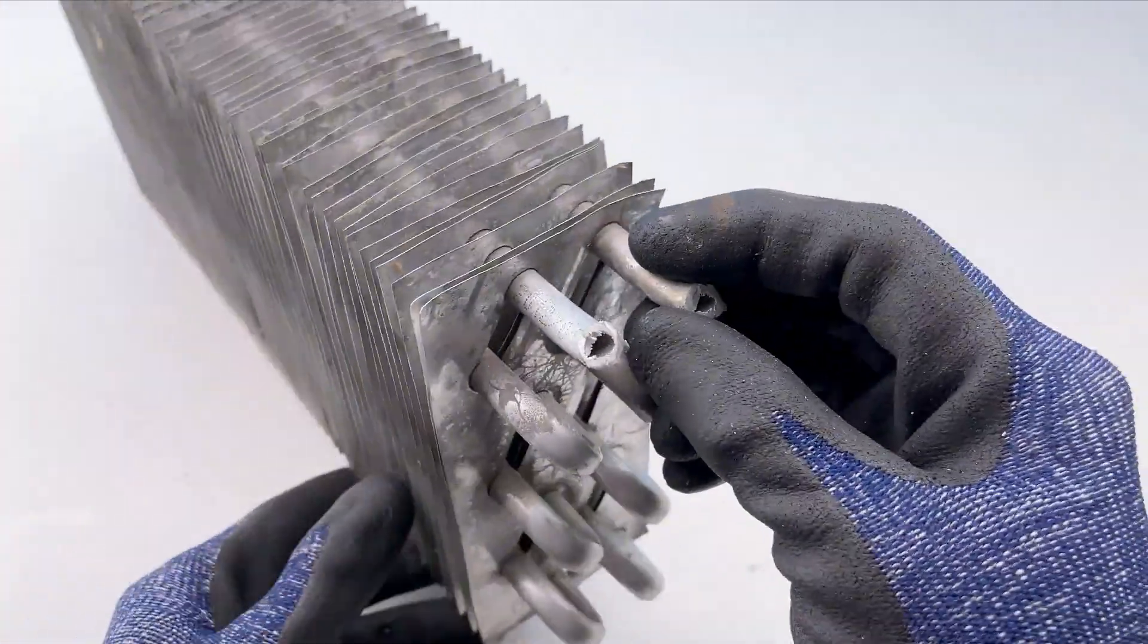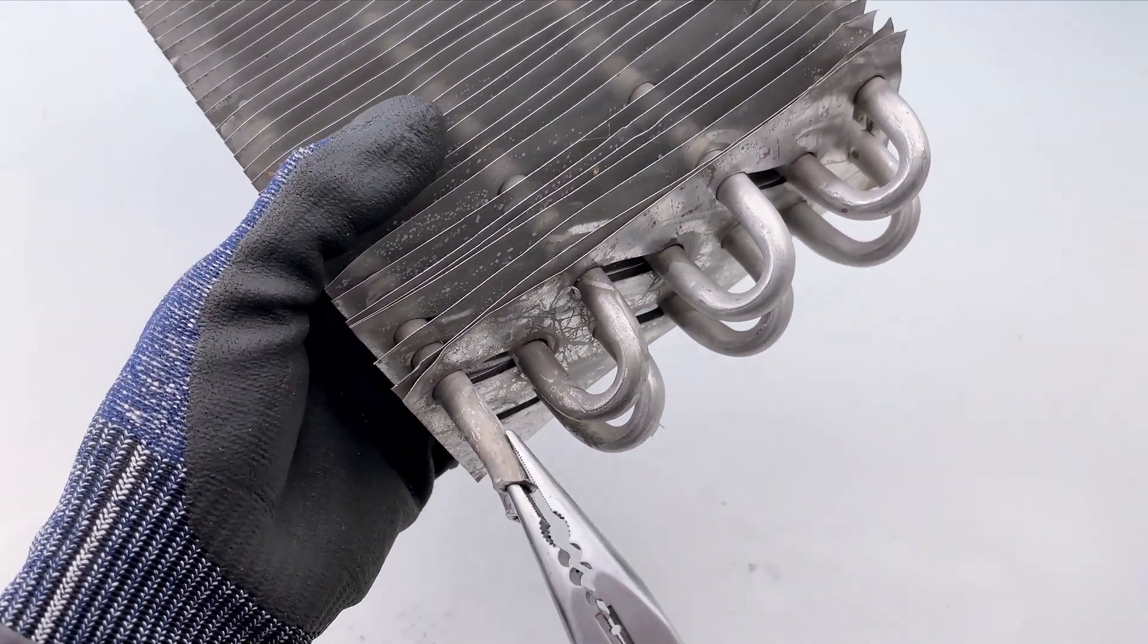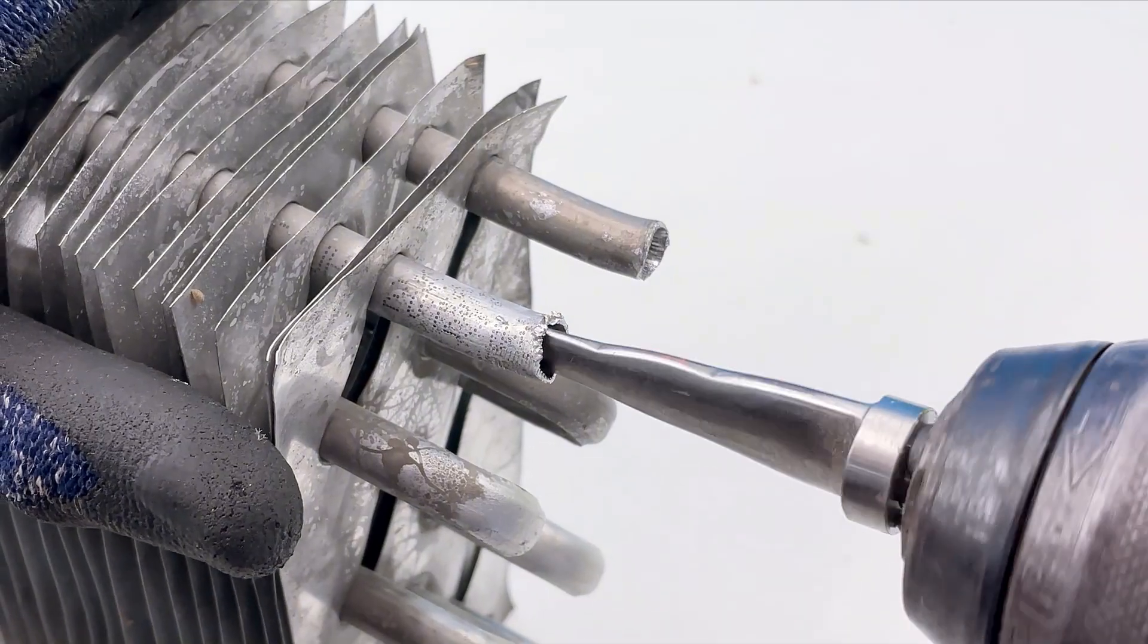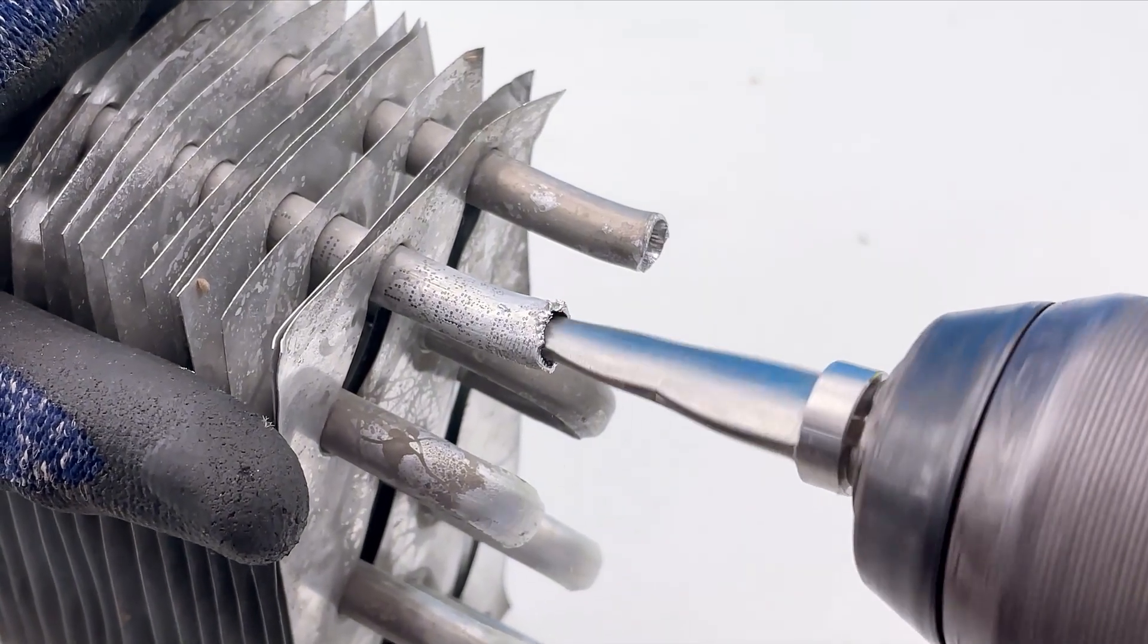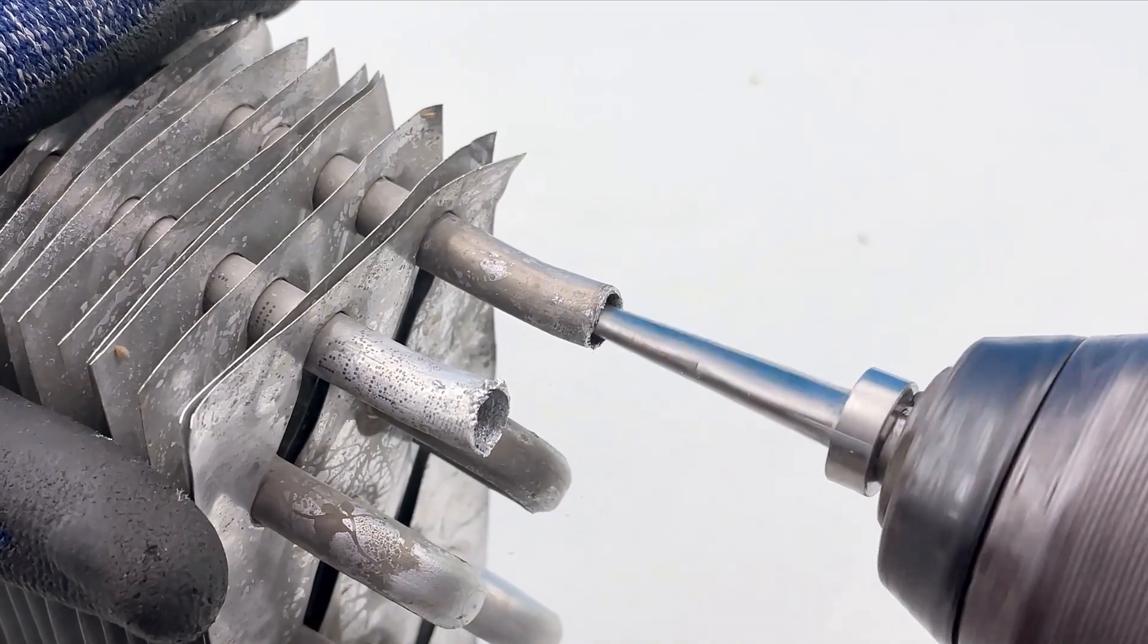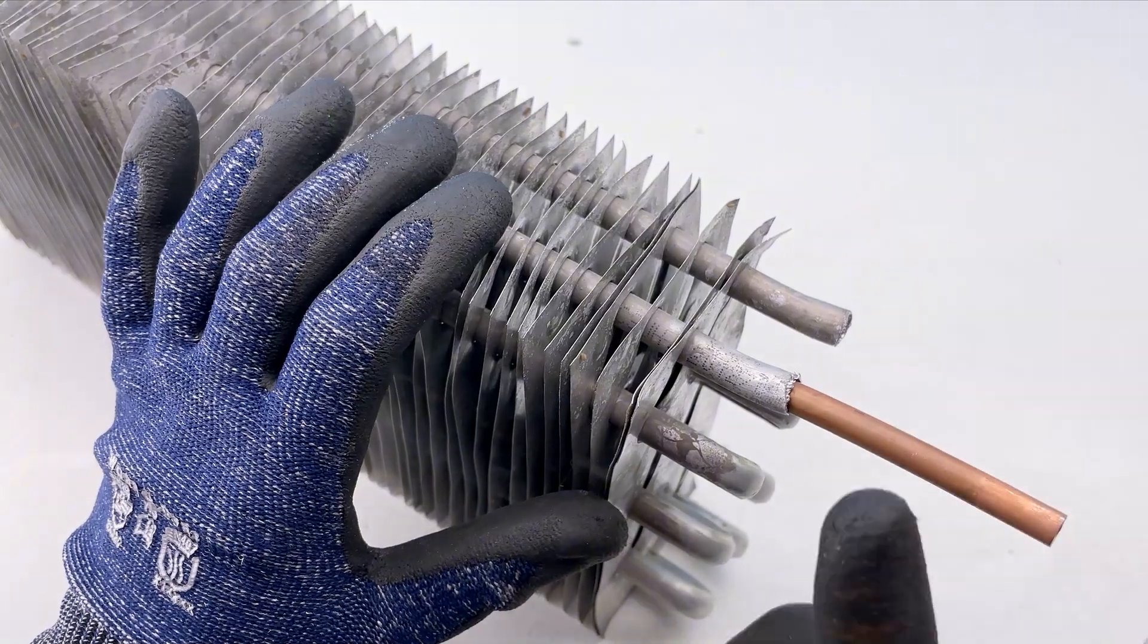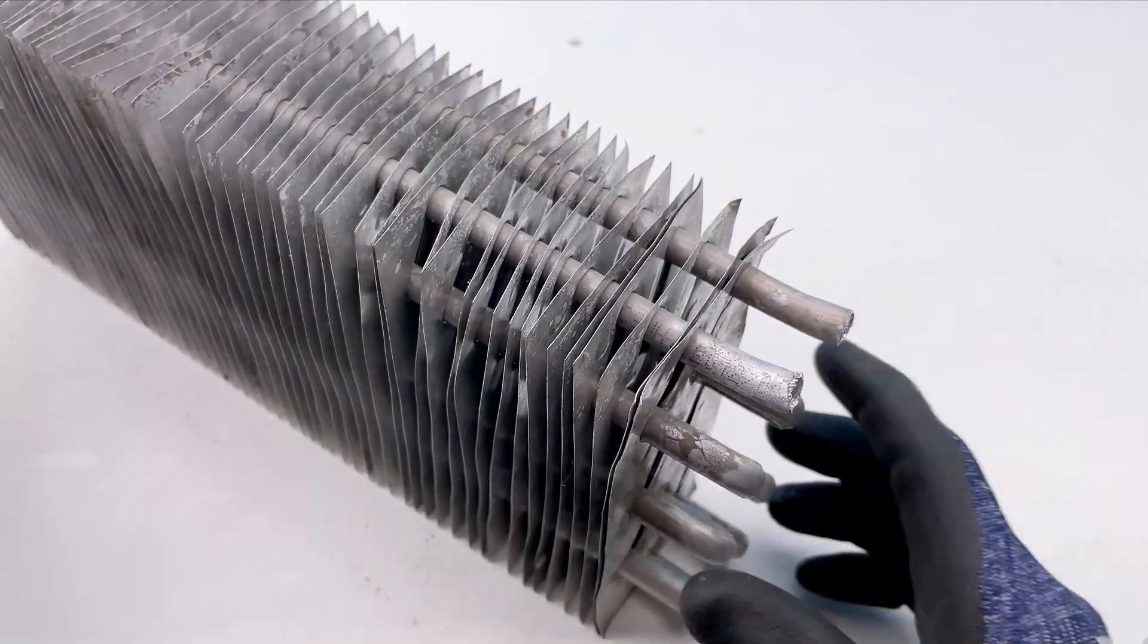After cutting the parts, these two tubes are straightened and expanded. They only need to be wide enough for a copper tube to fit inside.